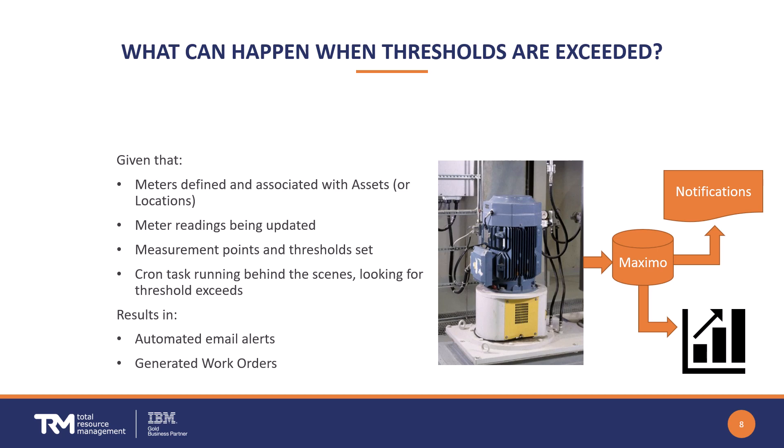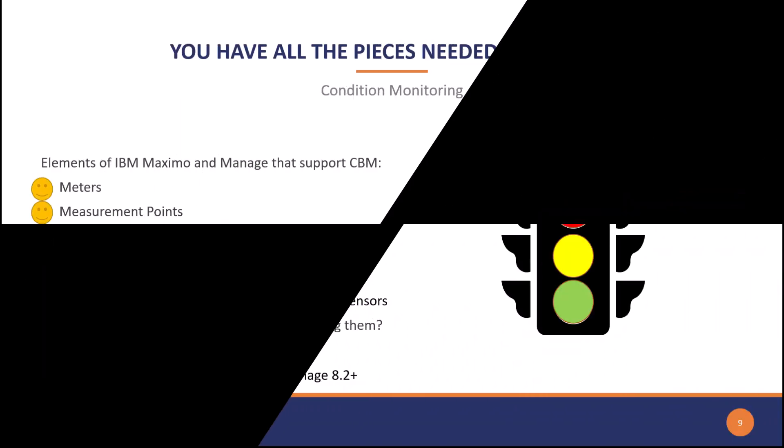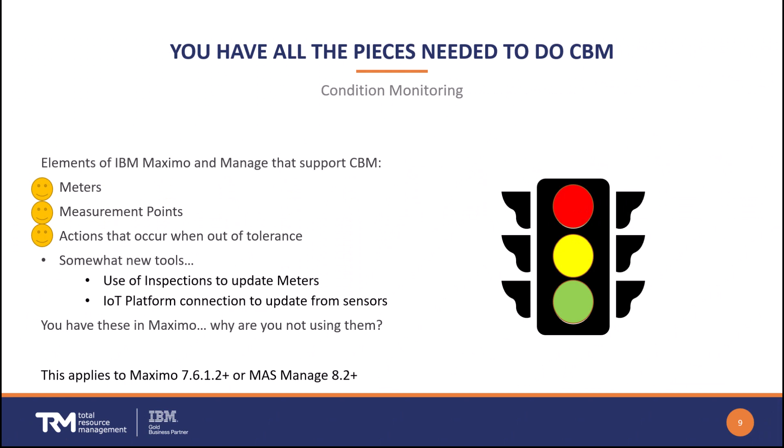With just a few steps, we've created an automated environment using our criteria that lets us know when there's a problem — how cool is that! Part one was a very quick look at meters and measurement points, something you may already know about. Be sure to take a look at part two for the rest of the list.